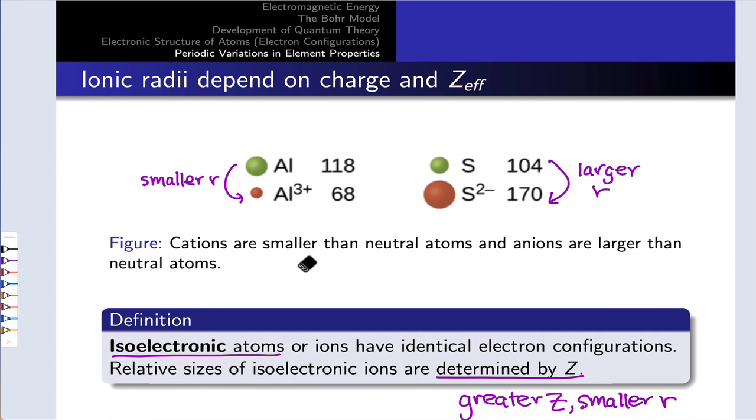The relative sizes of isoelectronic atoms or ions are determined by the number of protons in the nucleus. The more protons, the stronger the attraction to the nucleus, the smaller the atom or ion. It's a key idea in thinking about the relative sizes of isoelectronic atoms or ions.